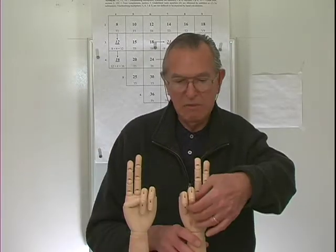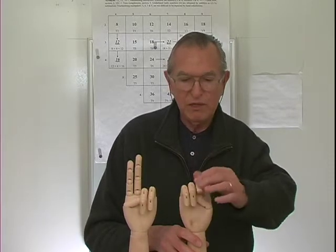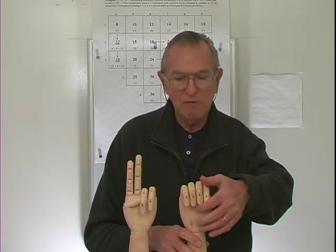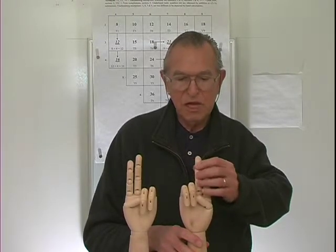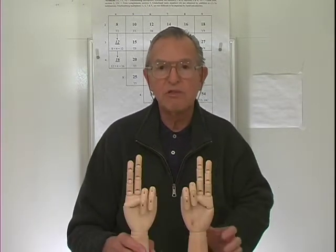8 times 8. I'm going to start with closed fists and count: 9, 10. Because 8 and 2 are 10, so I have 2 extended fingers on each hand — it now represents 8 times 8. I'm going to multiply the open fingers: 2 times 2 is 4, that's the ones place. Then I'm going to add the closed fingers: right hand has 3 closed fingers, left hand has 3 closed fingers. 3 and 3 is 6. So 8 times 8 is 64.